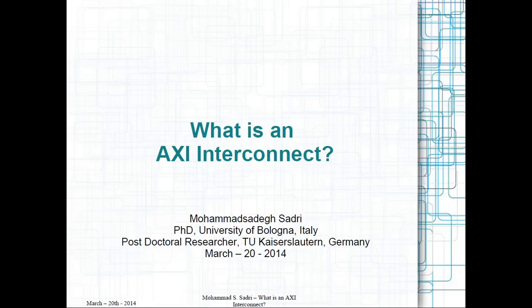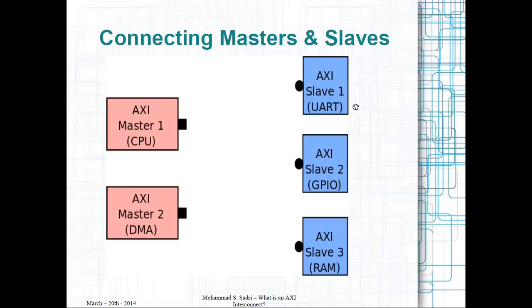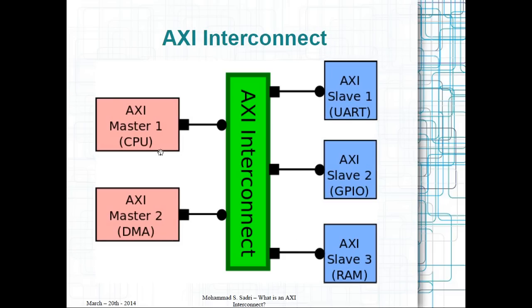In this video, I am going to talk about what is an AXI interconnect. In the previous video, I talked about what is AXI, what is an AXI master, and AXI slave. Suppose that you have a set of AXI masters and a set of AXI slaves, and each of these AXI masters should be able to initiate transactions to each of the AXI slaves. There is a unit which we call an AXI interconnect, and this unit is responsible for connecting the AXI slaves and AXI masters.